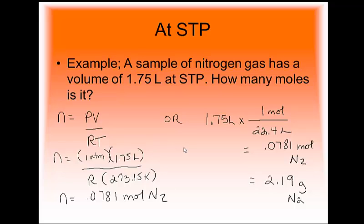Keep in mind, however, this nice shortcut — the ratio where one mole of an ideal gas equals 22.4 liters — is only going to work at STP and only STP. That's only 0 degrees Celsius and 1 atmosphere. The minute one of those variables is changed, you cannot use that ratio.